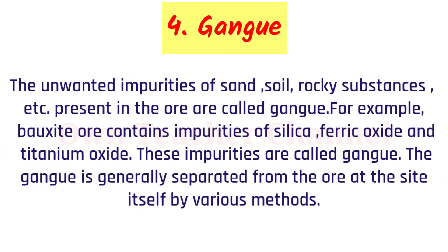Gang: The unwanted impurities of sand, soil, rocky substances, etc., present in the ore are called gang. For example, bauxite ore contains impurities of silica, ferric oxide, and titanium oxide. These impurities are called gang. The gang is generally separated from the ore at the site itself by various methods.